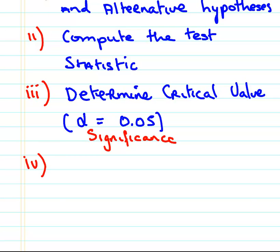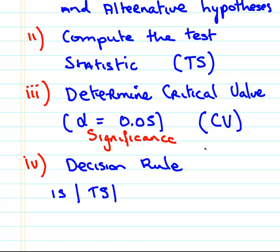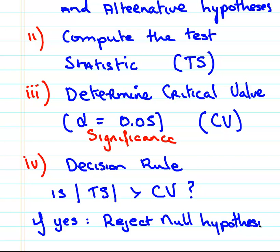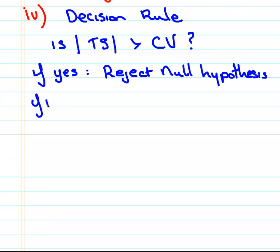The next part is the decision rule. I'm going to use a decision rule that applies across all types of hypothesis test. Is the absolute value of the test statistic greater than the critical value? If yes, we reject the null hypothesis. If no, the wording here is important, we fail to reject the null hypothesis.